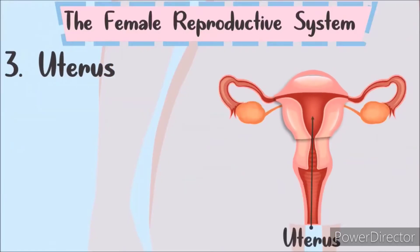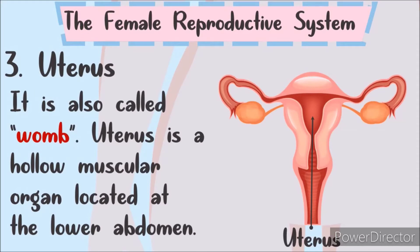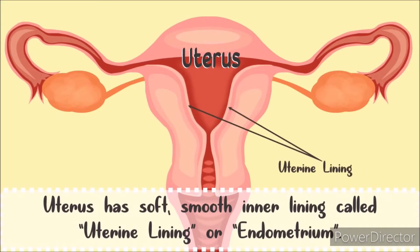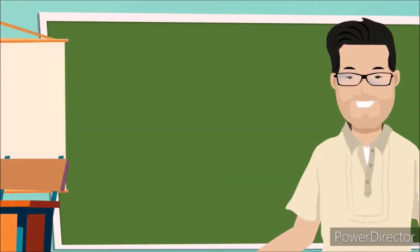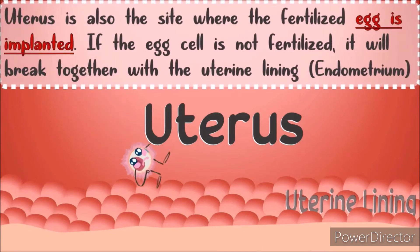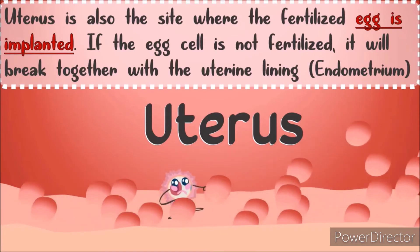Next is the uterus. The uterus is called the womb. It is a hollow muscular organ located in the lower abdomen. It has a soft, smooth inner lining called the uterine lining or endometrium. This lining becomes thicker as it accumulates blood and nutrients to accommodate the unborn baby as it develops. The uterus is also the site where the fertilized egg is implanted. If the egg cell is not fertilized, it will break down together with the uterine lining and is discharged during menstruation.